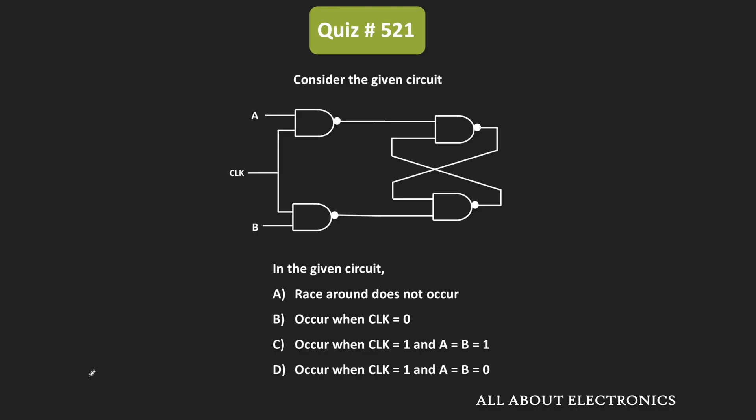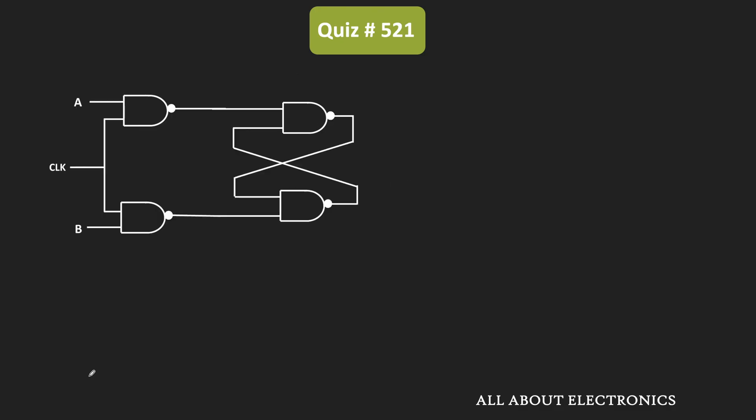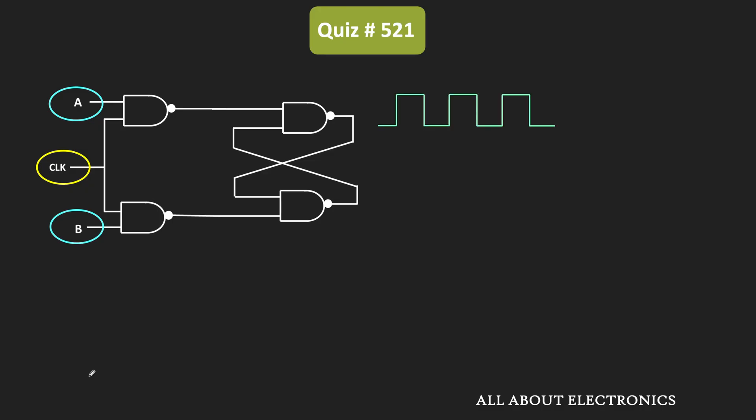Welcome to the YouTube channel all about electronics. In this question, we've been given a circuit and asked to find which one of the following options is correct. Basically, we need to determine whether the race around condition will happen in this circuit. The race around condition in a digital circuit is where, when the clock signal is high, the output toggles continuously between one and zero for a specific input combination.